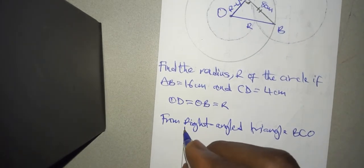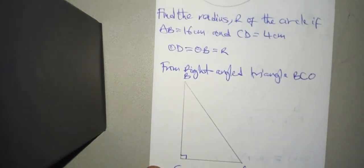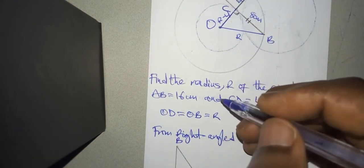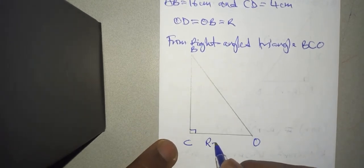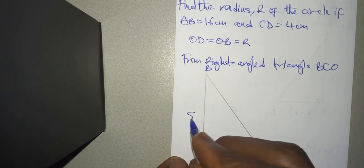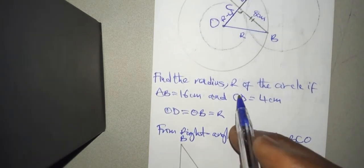This will be B and this will be O. So OC or CO is R minus 4, BC is 8 centimeters, and OB is R.